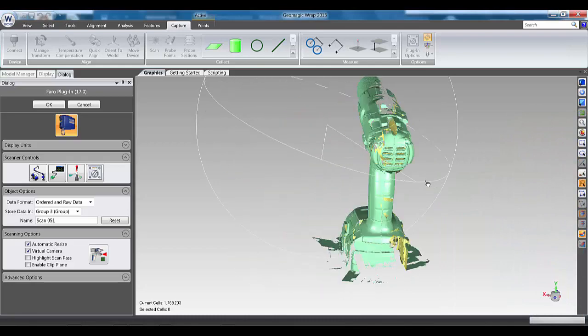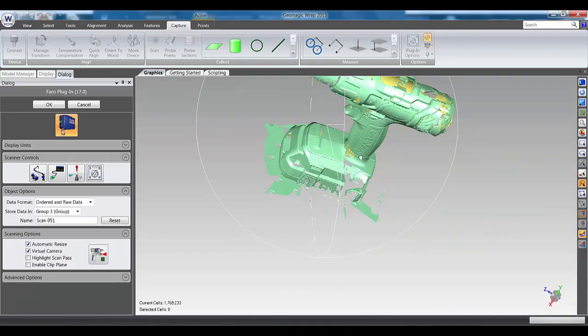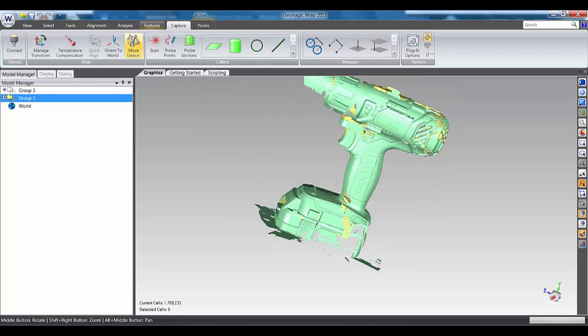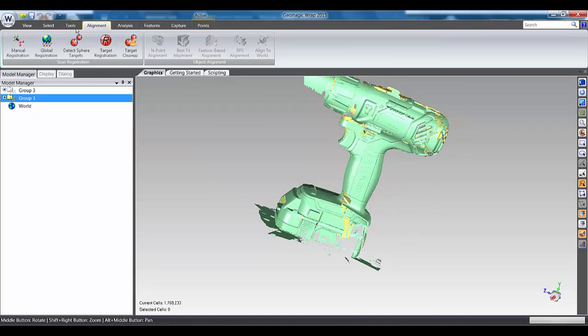So now we're back sitting at the PC, you can see the amount of data I've captured very quickly. If I just close the plug-in down, the first thing I would probably do here is go to an alignment, and I'd do a global registration.